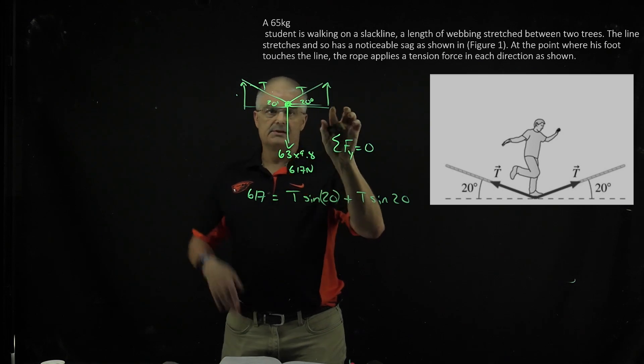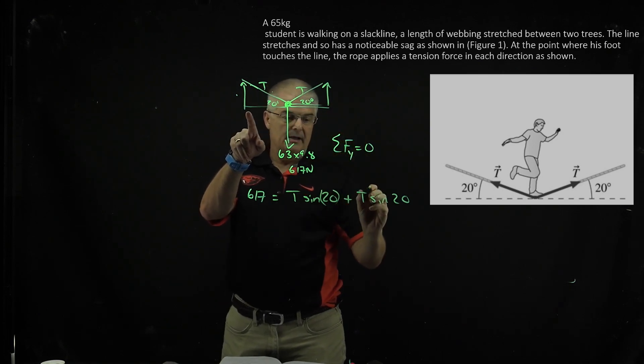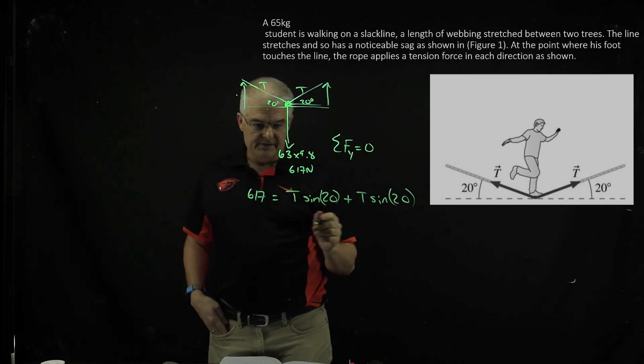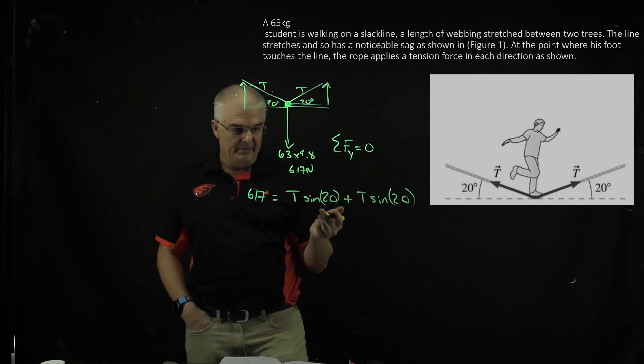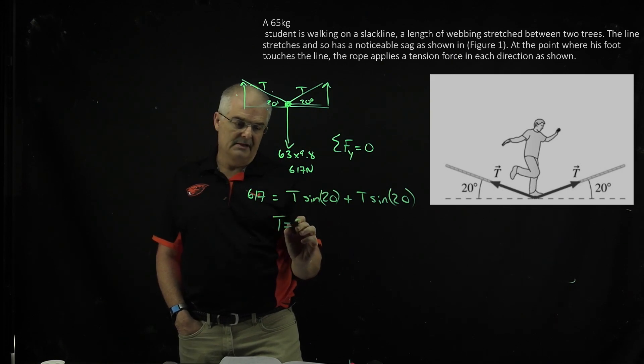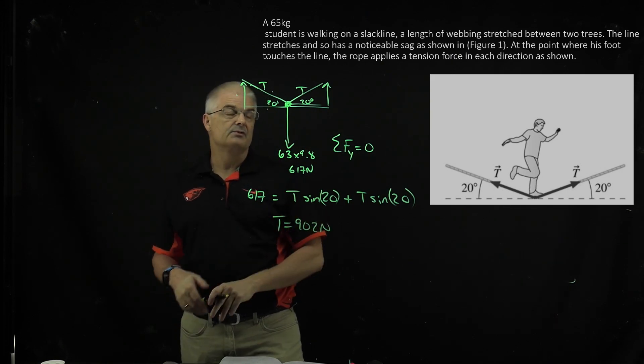So it's T sine 20 plus, because this is both, they're both 20 degrees, and I have one equation and one unknown. And when I solve this out, I just do the math, you can solve that. I get the T to be 902 newtons. So that's how you solve these problems.